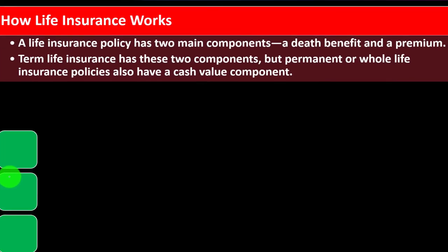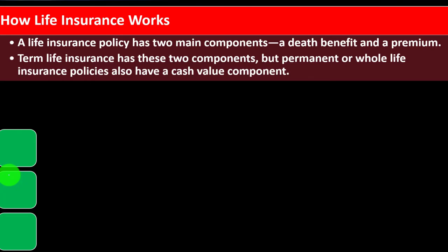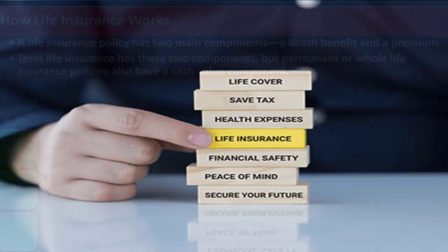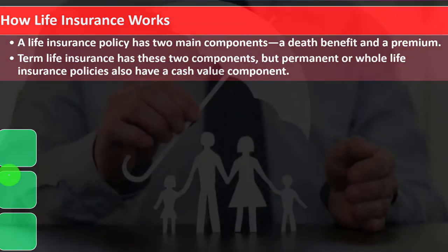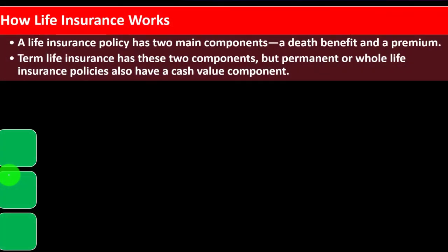How life insurance works: a life insurance policy has two main components — a death benefit and a premium. Term life insurance has these two components, but permanent or whole life insurance policies also have a cash value component. Term life insurance is fairly straightforward: you're buying it because you're trying to insure against your dying and the impact it might have on someone dependent upon you.